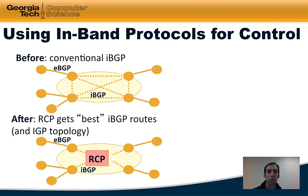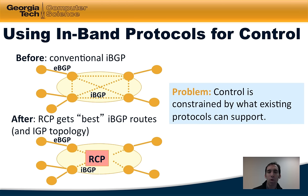The RCP effectively used BGP as a control channel so that the forwarding elements thought they were talking to just another router, but in fact all of the smarts for the network were centralized at a single point. This approach makes deployment somewhat easier since it doesn't require standardization on a new set of control protocols. However, the problem with the approach is that the control one has over the network is constrained by what existing protocols like BGP can support, so the RCP was limited to controlling BGP routing decisions, when in fact a network operator might want to control a much wider range of behaviors.